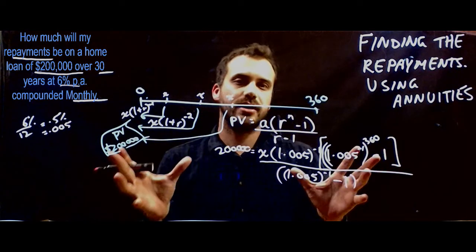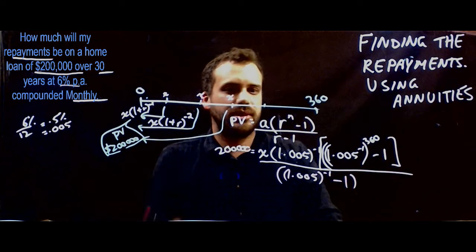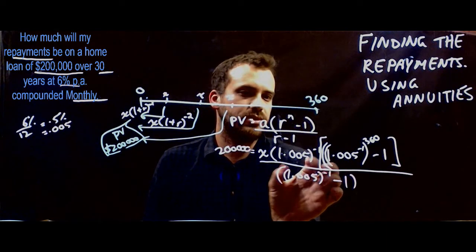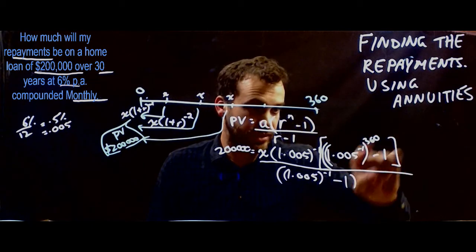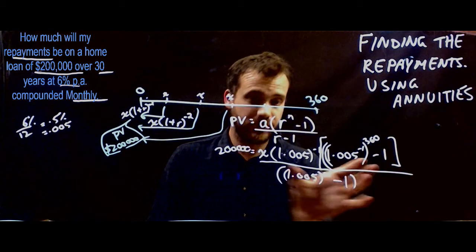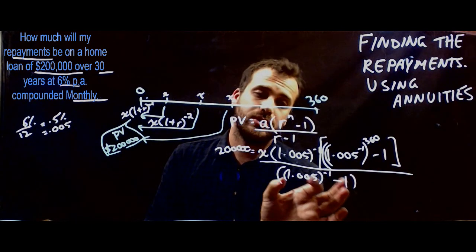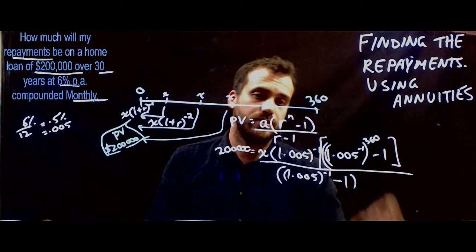Okay. You can see now that we're starting to create a really big mess. 1.005 to the negative 1. And then this weird thing that happens in brackets, 1.005 to the negative 1 to the power of 360 minus 1, all over. And then that weird rate, 1.005 to the negative 1, minus 1.